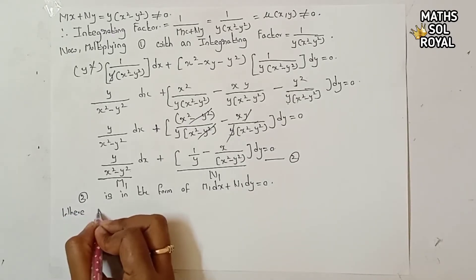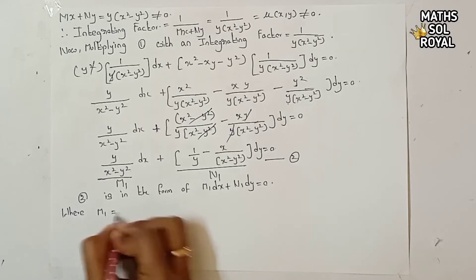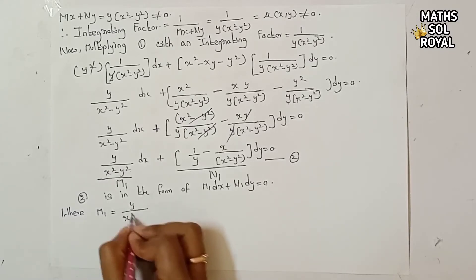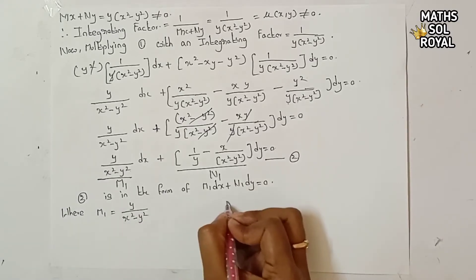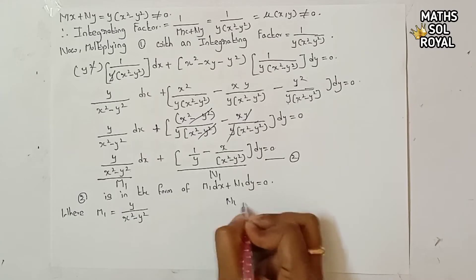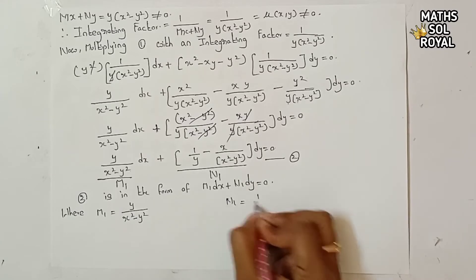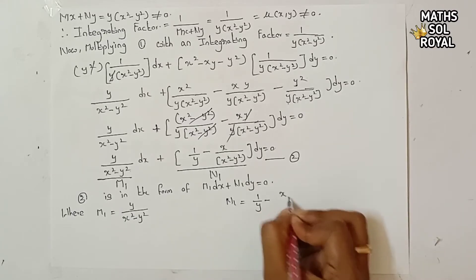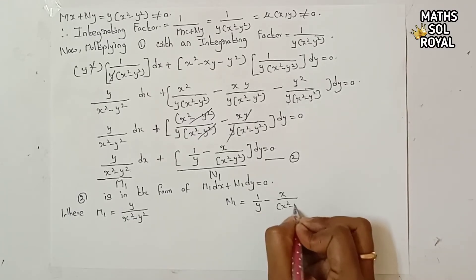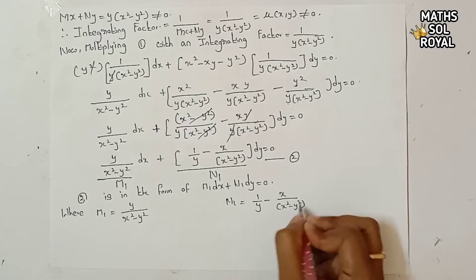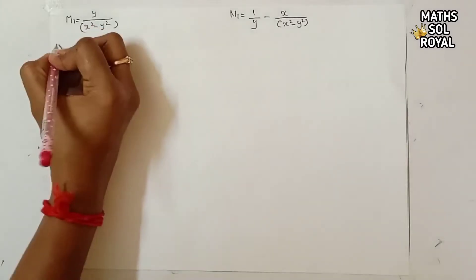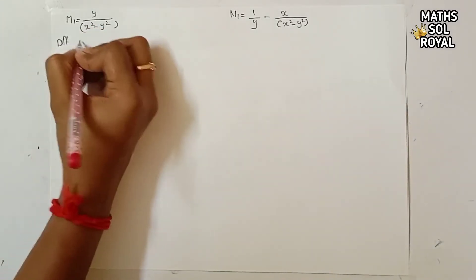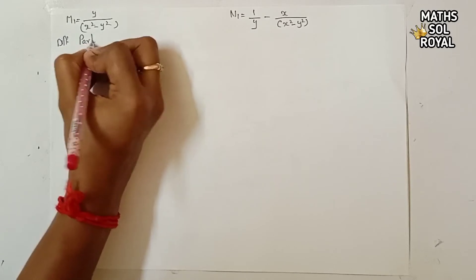Equation 2 is in the form M₁ dx + N₁ dy = 0, where M₁ = y/(x² - y²) and N₁ = 1/y - x/(x² - y²). Now differentiate M₁ partially with respect to y.